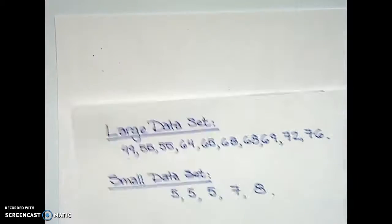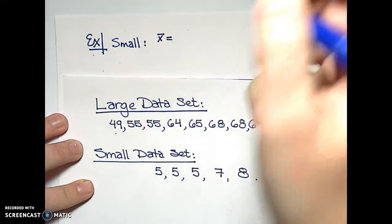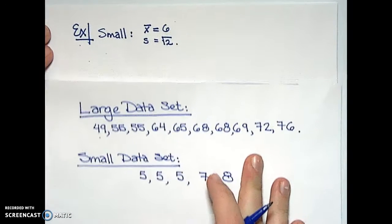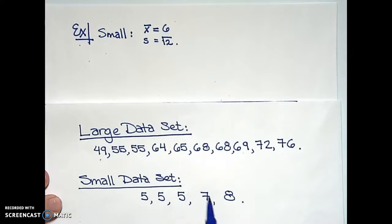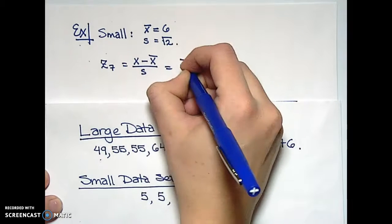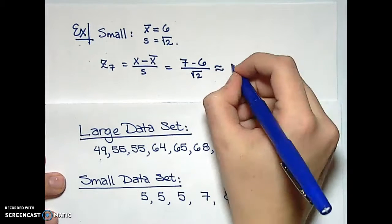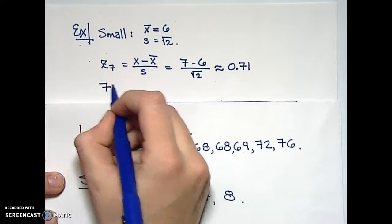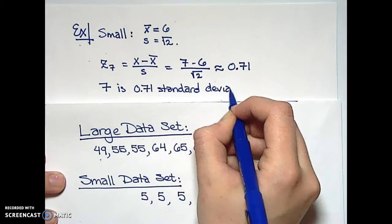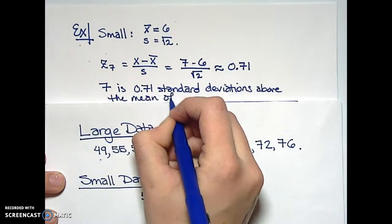Let's do some more examples. This time let's turn to our small data set: 5, 5, 5, 7, 8. The sample mean was 6 and the sample standard deviation was the square root of 2. So what is the z-score of the value 7? z₇ equals 7 minus 6 over the square root of 2. Plugging that into a calculator and rounding, we get 0.71. This means the data value 7 is 0.71 standard deviations above the mean of 6.